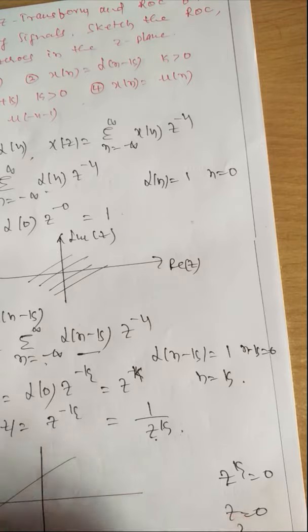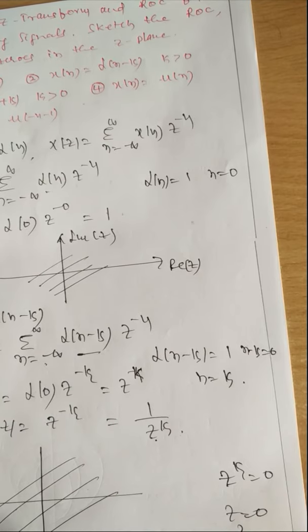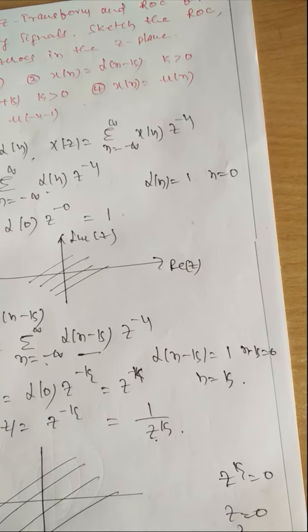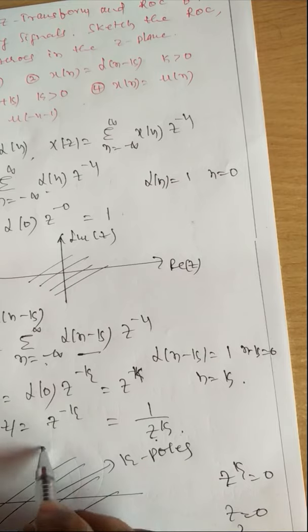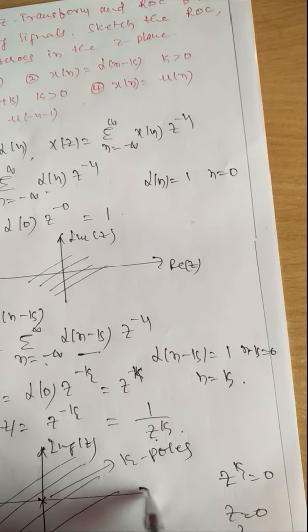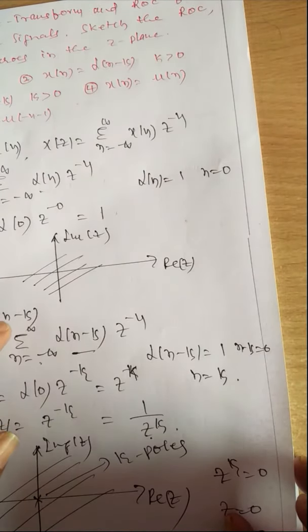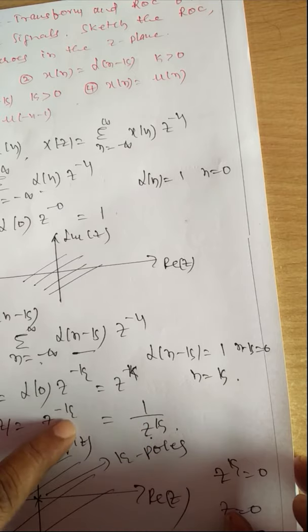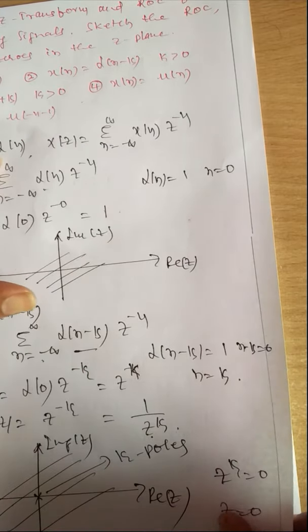The ROC is the entire Z-plane except at Z = 0. The plot shows the imaginary part and real part of Z, with k number of poles at the origin. This is very useful when doing inverse Z-transform: if you have 1/Z^k or Z^(-k), its inverse Z-transform is δ(n-k); and if X(z) = 1, its inverse Z-transform is δ(n).